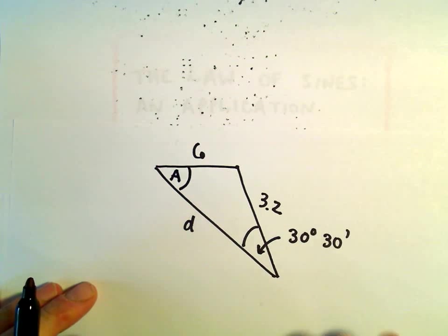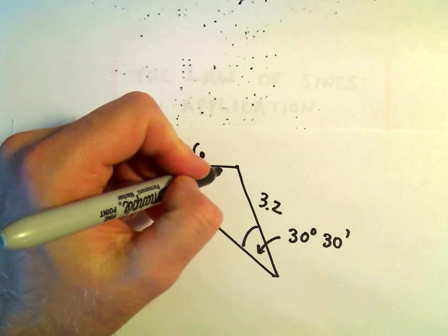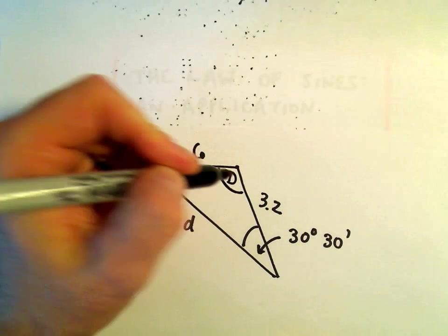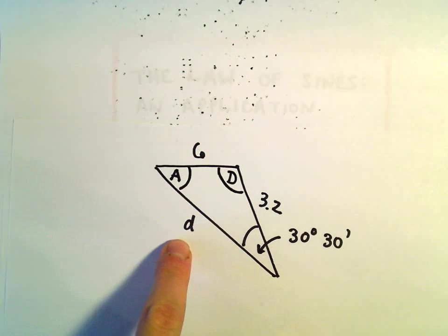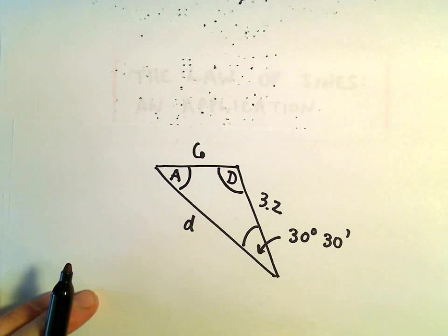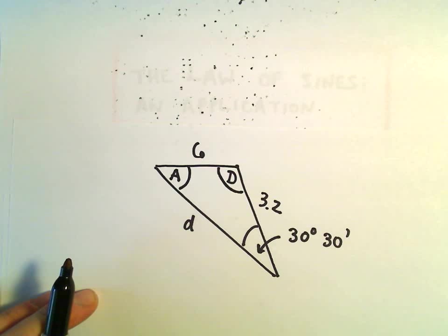Maybe I'll call that angle A. Once we figure out angle A, we can then figure out this other angle that's missing. Maybe I'll call it capital D. And then from that, we can use the law of sines to figure out the side length for little d, which is the distance we're interested in.